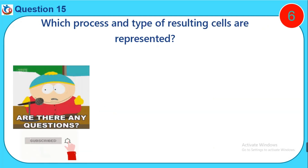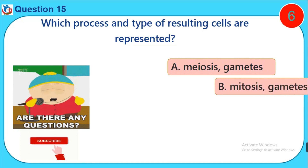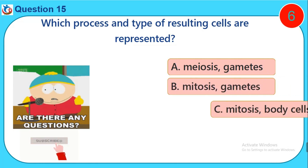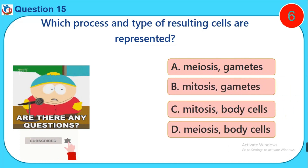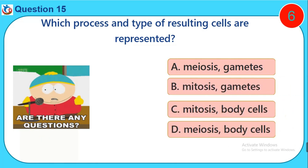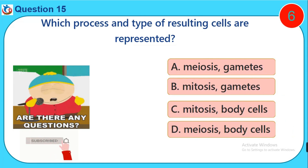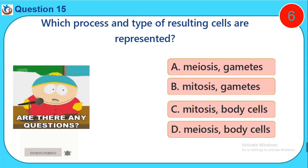Question fifteen: Which process and type of resulting cells are represented? A) Meiosis, gametes, B) Mitosis, gametes, C) Mitosis, body cells, D) Meiosis, body cells.